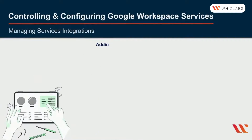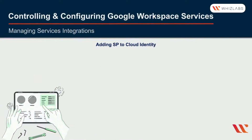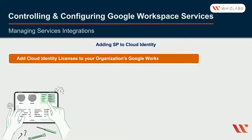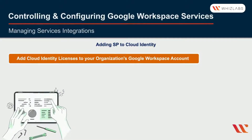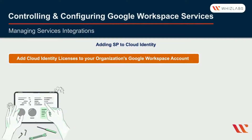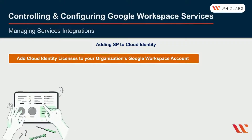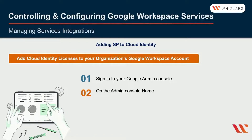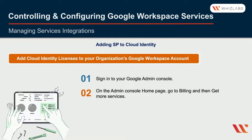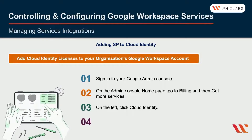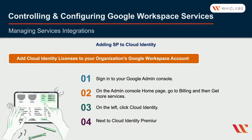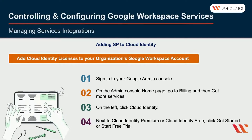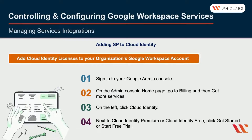Now we will learn how to add Cloud Identity licenses to your organization's Google Workspace account. If you are an existing Google Workspace customer, here is how you can add Cloud Identity licenses: first, sign into the Google Admin Console. Then, on the Admin Console home page, go to Billing and then Get More Services. Next, on the left, click on Cloud Identity, and next to Cloud Identity Premium or Cloud Identity Free, click Get Started. You can then start the free trial and choose between the Premium or Free edition.